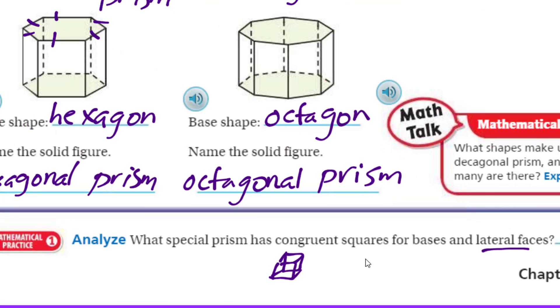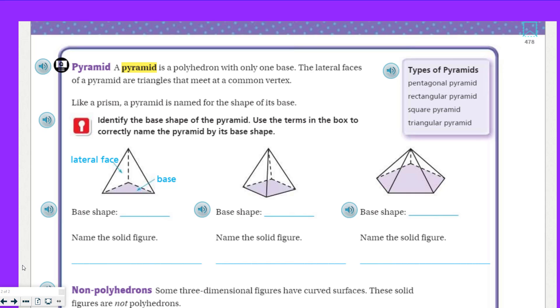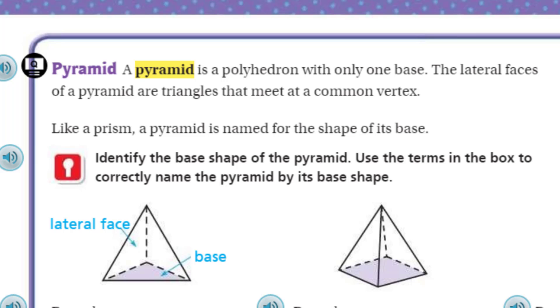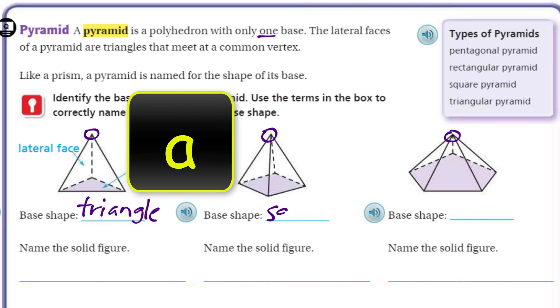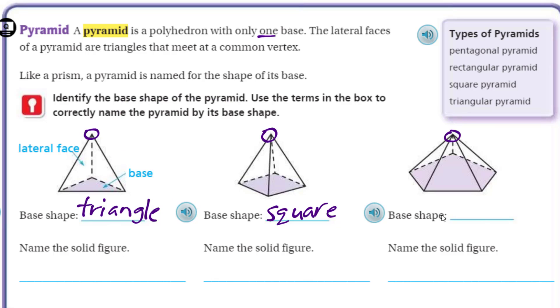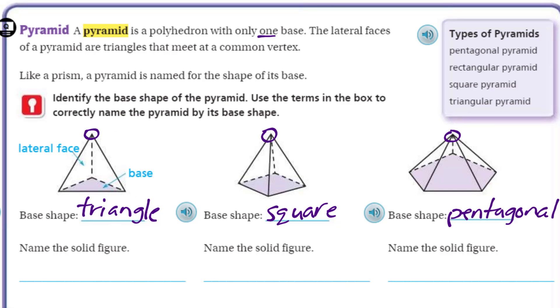A pyramid! I knew we were going to come to these guys. A pyramid is a polyhedron with only one base. Aha, keyword: one. Let's underline that. The other ones had two bases. You can just tell by the pointy little top that it couldn't really lie very nicely on a surface. The lateral faces of a pyramid are triangles that meet at a common vertex. This guy right here—this is where they're all meeting up here at the top, the pointy little thing I was telling you about. Like a prism, a pyramid is named for the shape of its base. Identify the base shape of the pyramid. Use the terms in the box to correctly name the pyramid by its base shape. Base shape here looks like a triangle, so I'm going to write triangle. That's a square—super easy. Oh, that's one, two, three, four—is that a pentagon? Sure looks like it to me.